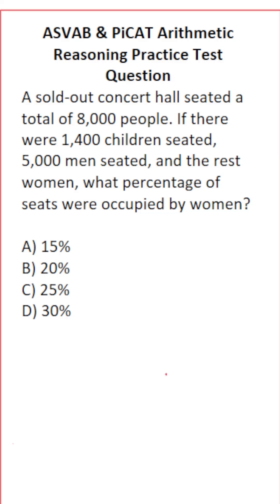This arithmetic reasoning practice test question for the ASVAB and PiCAT says a sold-out concert hall seated a total of 8,000 people. If there were 1,400 children seated, 5,000 men seated, and the rest were women, what percentage of the seats were occupied by women?